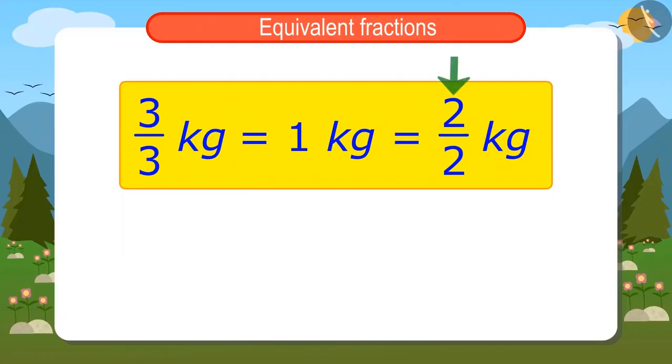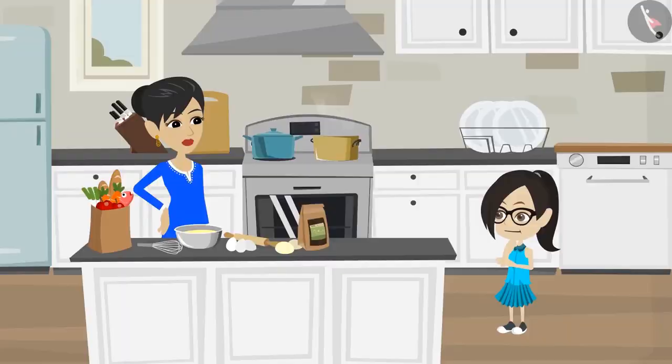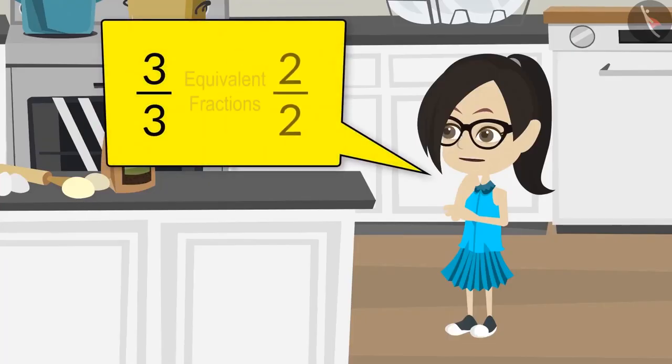Yes, Vandana. When there is the same number in the numerator and denominator, then it means we are talking about the whole quantity. Oh, this means that 3 upon 3 and 2 upon 2 are equivalent fractions.